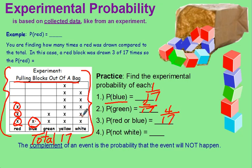What about the probability of not pulling out a white block? Well, there are 17 tries. Five times we chose a white, so 12 times we did not pull out a white block. We call this the complement of an event. It is the probability that the event will not happen.